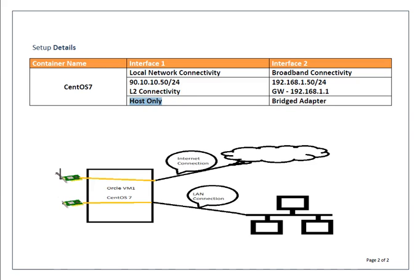Host-only means connectivity will be within the host only. The second interface is for broadband connectivity — through this interface I can communicate outside my machine, or with the internet. This interface will have IP 192.168.1.50, subnet /24, and gateway 192.168.1.1, which is my broadband router IP. This interface is going to be a bridged adapter, bridged over my physical Wi-Fi interface.